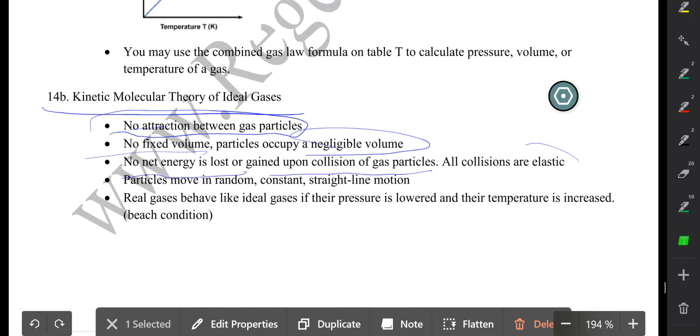So if you have two gas particles here, if one was moving at five miles an hour and one was standing still, then eventually when they collide, this particle will move at five miles an hour and this particle will take its place and stand still. So the energy is not lost, it is not gained, it is only transferred. Particles will move in random constant straight line motion.